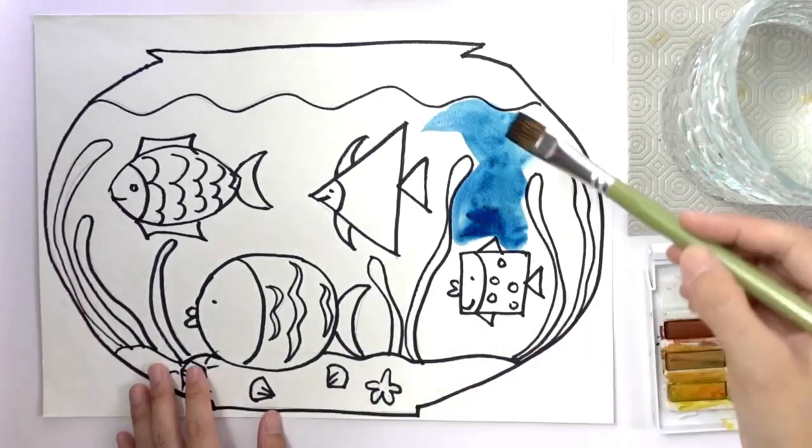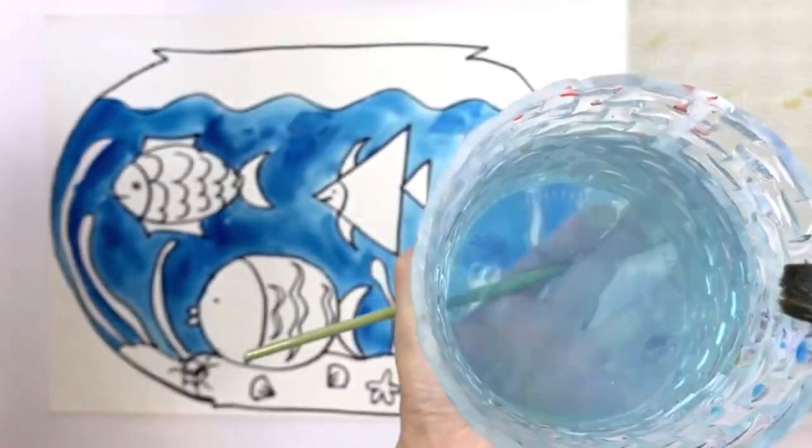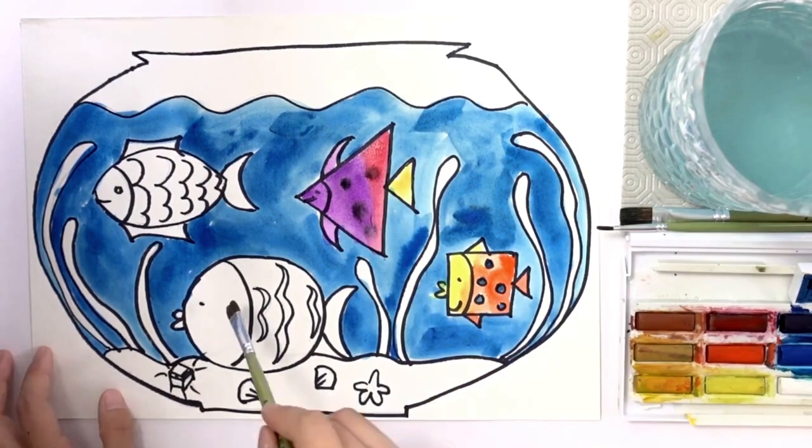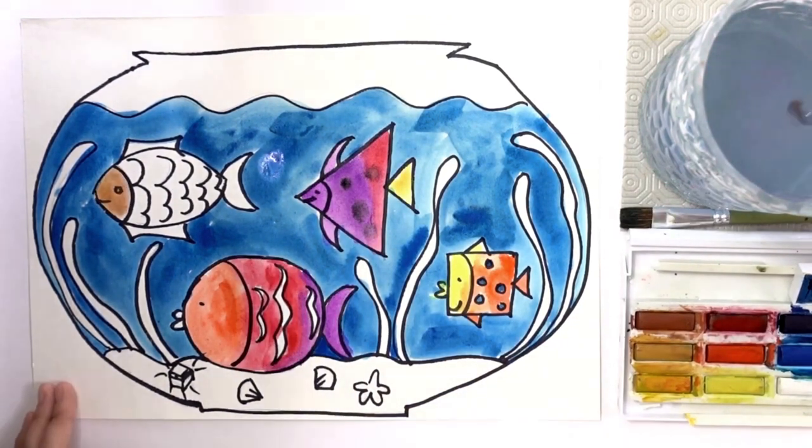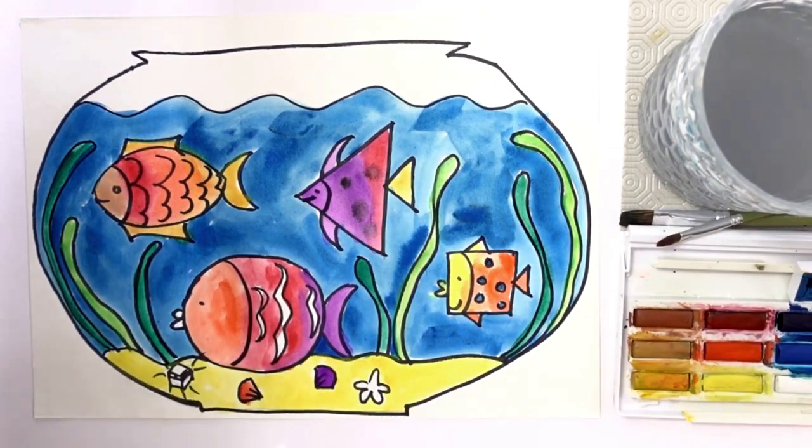We use blue to paint the water. For the fish, we can use any color. Use a large brush to paint large areas and a small brush to paint small areas.